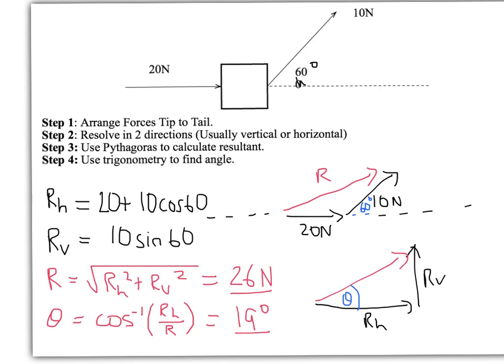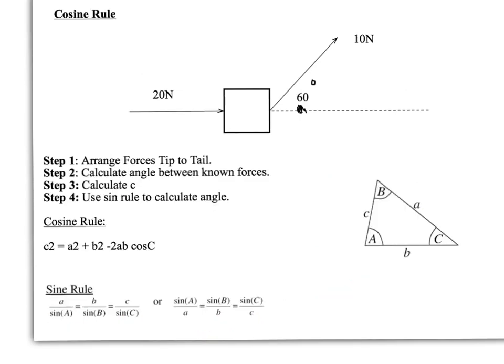At A-level maths you'll learn about the sine and cosine rules, which actually help make this a lot simpler in terms of calculations and steps-wise. So the first thing, again, you still arrange your forces tip-to-tail just as before. And you need to work out the angles inside your triangle this time. And then you can use those to calculate your C, which will be the hypotenuse in the longer side in this case. And then you can use the sine rule to calculate what the angle is. I've summarized those rules down there. This should say C squared, A squared, and B squared.